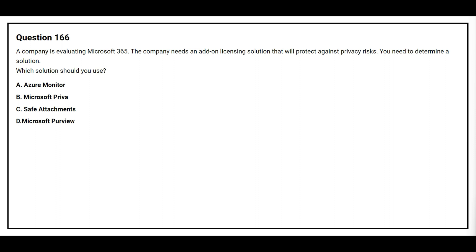Question number 166. A company is evaluating Microsoft 365. The company needs an add-on licensing solution that will protect against privacy risk. You need to determine a solution. Which solution should you use? Option A: Azure Monitor. Option B: Microsoft Priva. Option C: safe attachment. Option D: Microsoft Purview. The correct answer is Option B, Microsoft Priva.